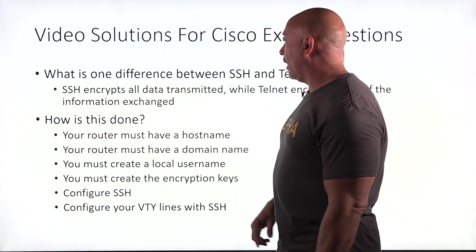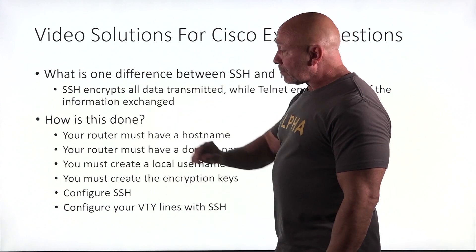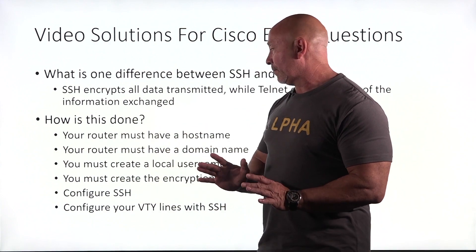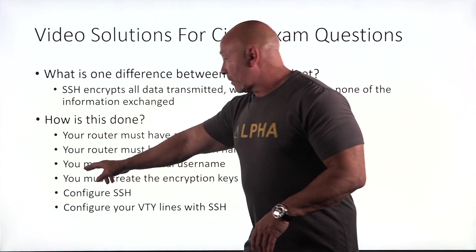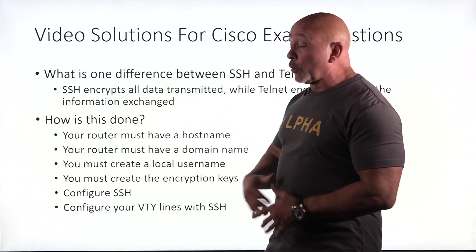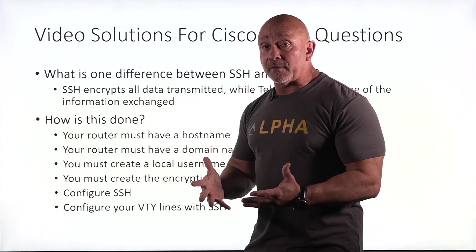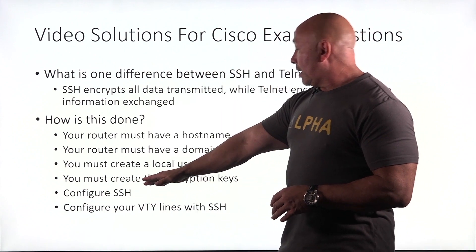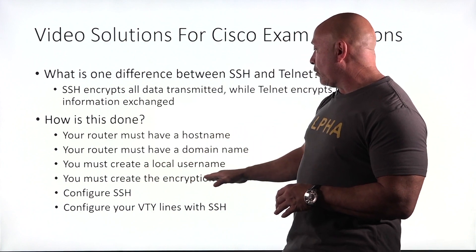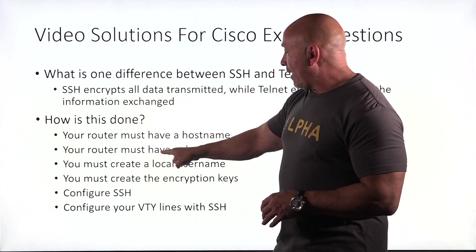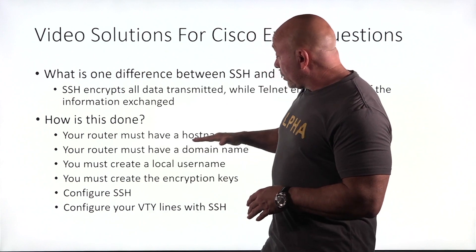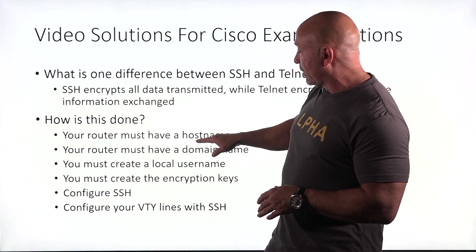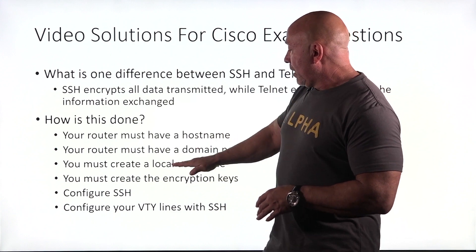So how is this done? First of all, your router has to have a host name. You need to create a local username — that's the whole point of authentication. You need to create encryption keys, but before that you have to have a domain name. The order is: hostname, domain name, local username.